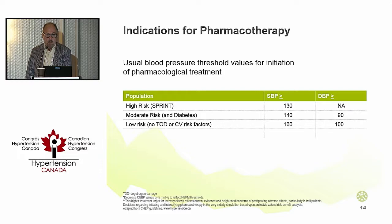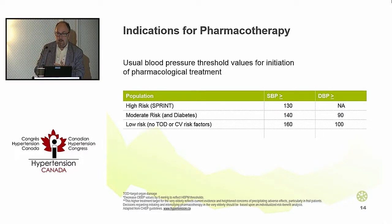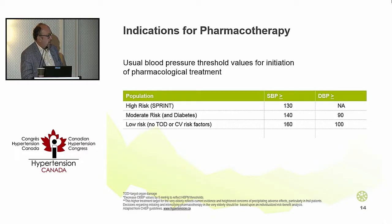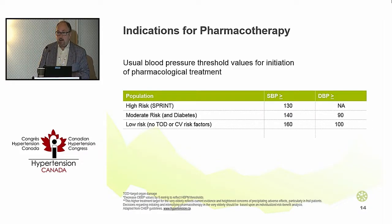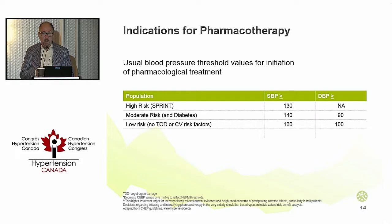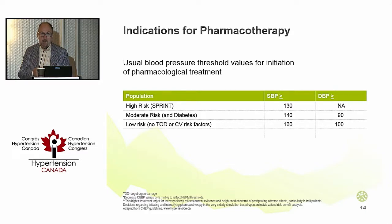That is reflected in the guidelines, as Dr. Rabi talked about. Valerie is a low-risk hypertensive. Her threshold for initiating drug therapy is 160 over 100. That doesn't take away from the health behavior changes, which should absolutely be implemented, but in terms of drug therapy, it all has to do with what's in it for the patient.